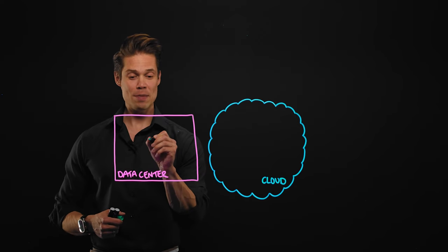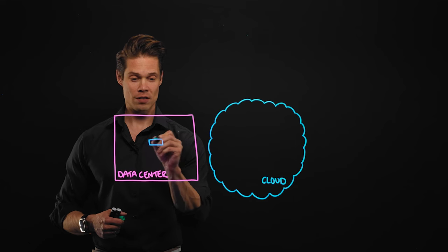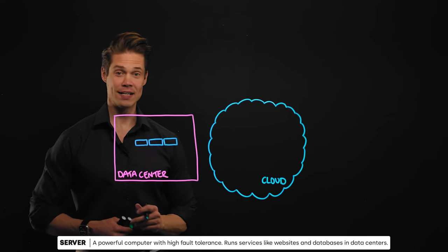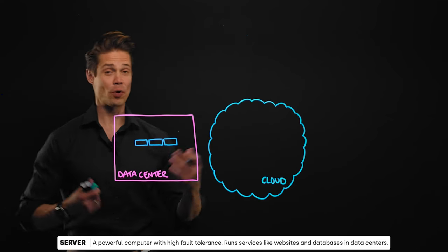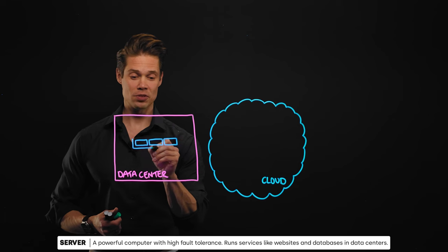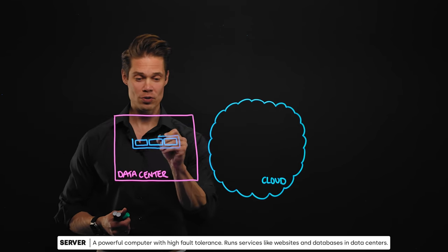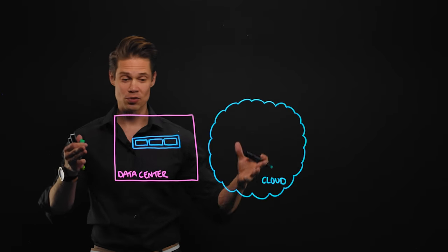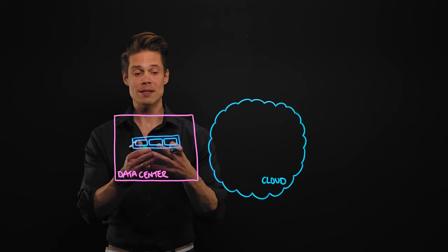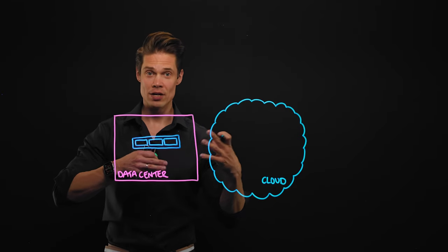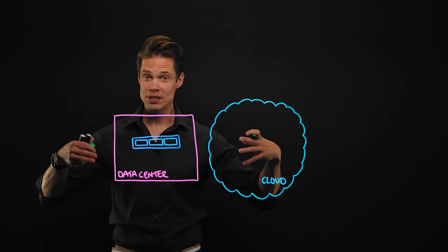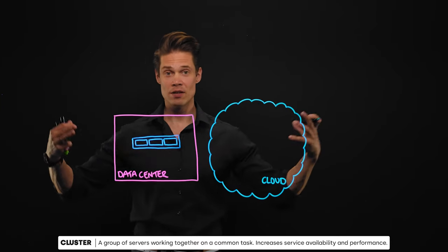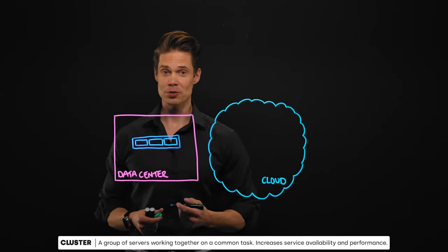Let's start with the most familiar components, which are computers or servers, as we call them in a data center environment. We probably have dozens or maybe even hundreds or thousands of these servers or compute nodes in one data center. Usually we make them work together — they are not just individual servers doing their own thing, but working as part of a bigger environment, leveraging the power of multiple servers as a single cluster.